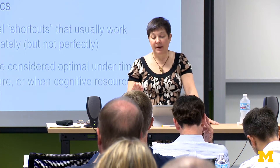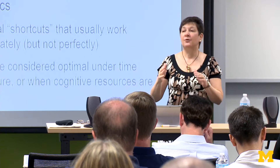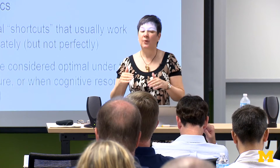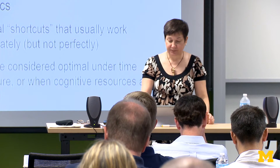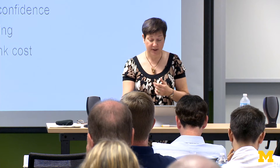Now I want to talk about a set of specific biases. There are lots and lots of biases — if you look up cognitive psychology and biases, you'll get strings of them. I'm just going to cover a few to give you a flavor for things that influence us when we're not necessarily aware of it. Specifically, I'll talk about these five: fixation and anchoring, confirmation, salience, availability, overconfidence and framing, and the related bias of sunk cost.